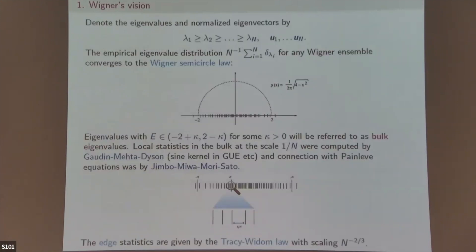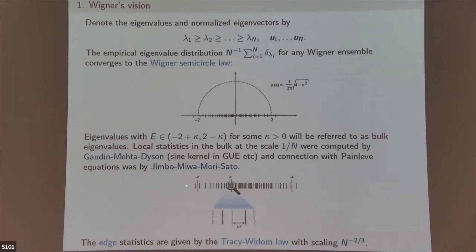In this talk I order eigenvalues in decreasing order. The standard semicircle law describes the eigenvalue density. The key task is to compute spacing statistics inside the bulk — the spacing is of order 1/n. This was calculated by Gaudin, then Mehta and Dyson, and connected to the Painlevé equation by Jimbo, Miwa, Mori, and Sato. The edge distribution was done by Tracy-Widom.